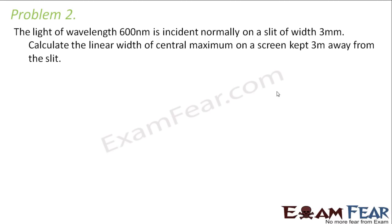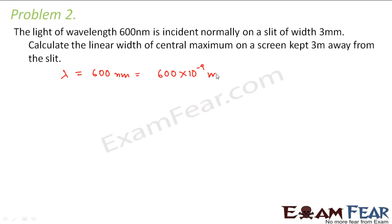Let us look at the next problem, which says that light of wavelength 600 nanometers is incident normally on a slit of width 3 millimeters. The wavelength is 600 × 10⁻⁹ meters, and the width of the slit is 3 × 10⁻³ meters. Calculate the linear width of the central maximum on a screen kept 3 meters away from the slit, so capital D = 3 meters.